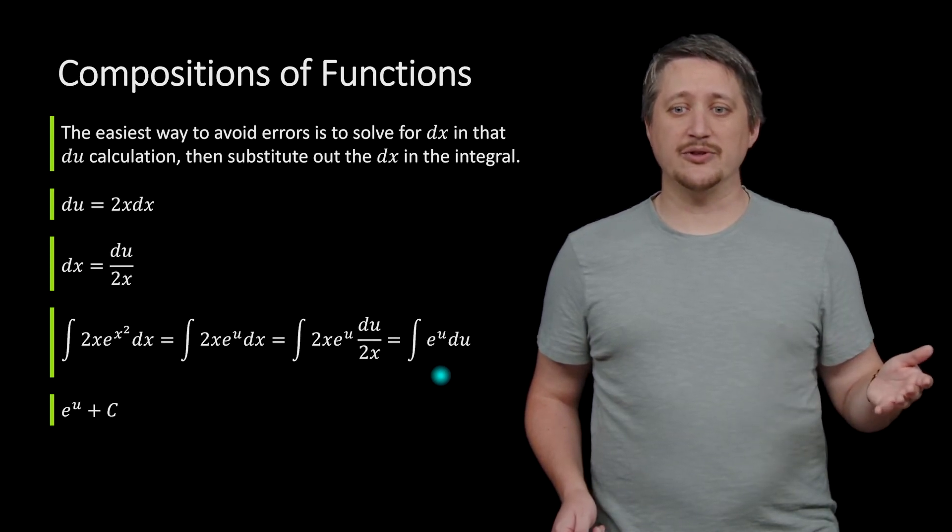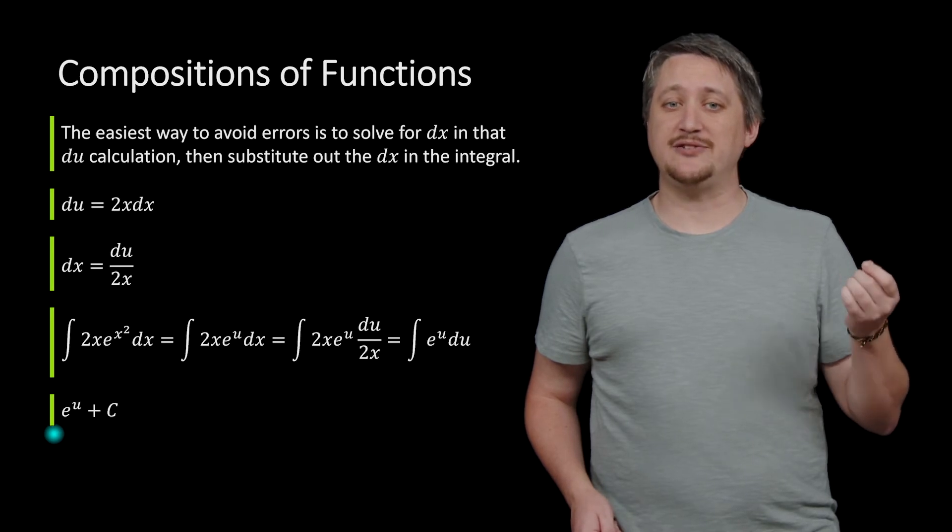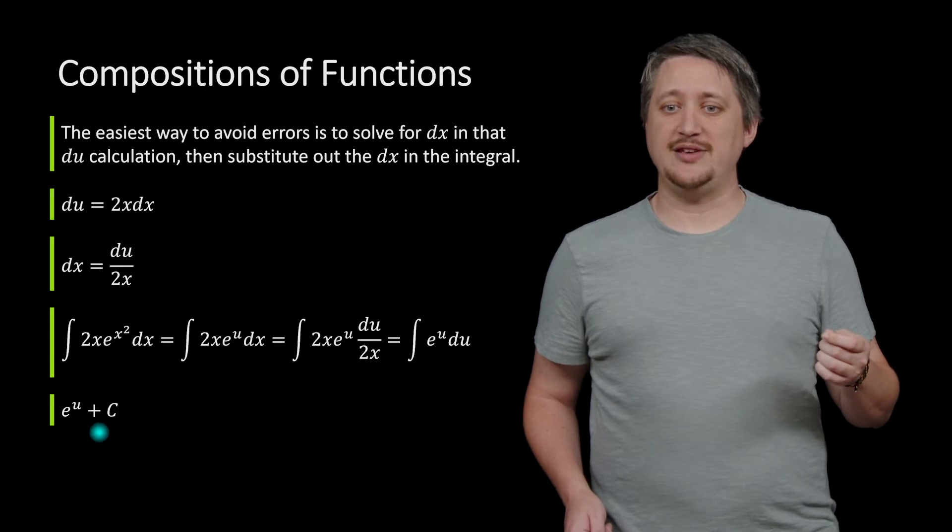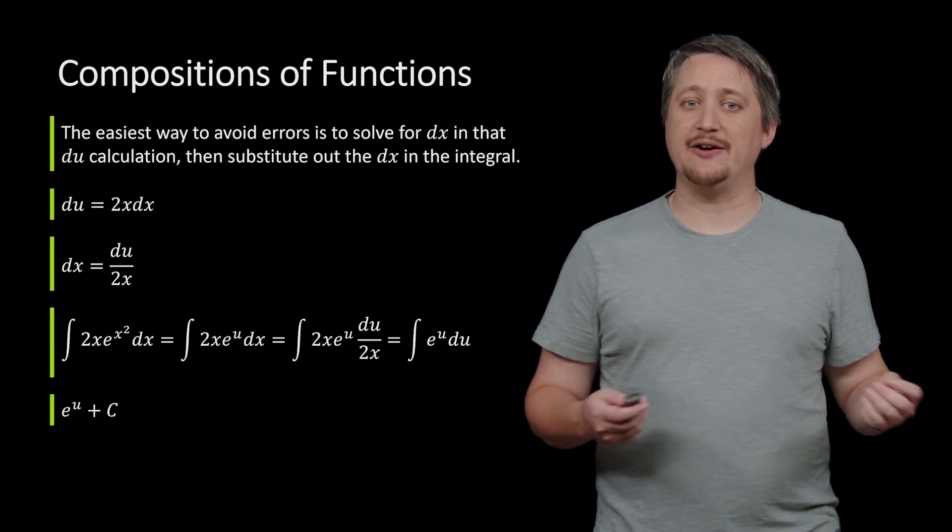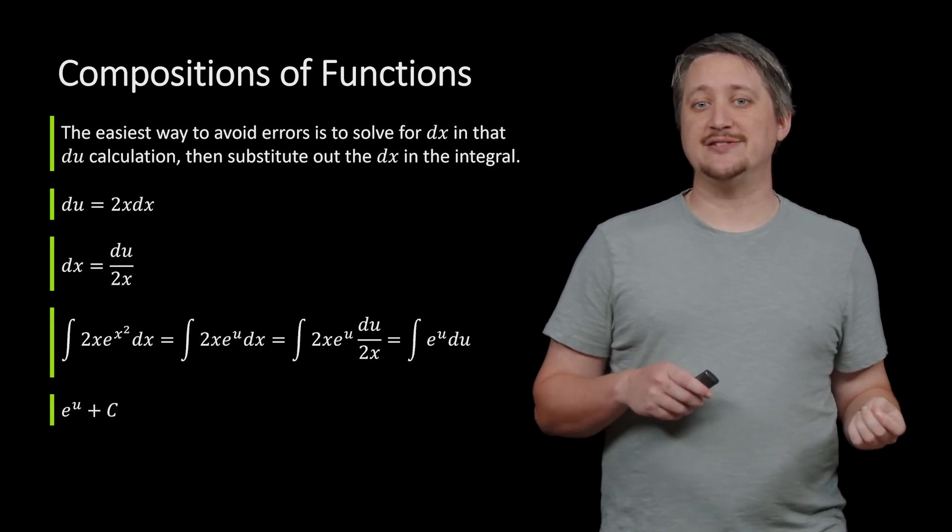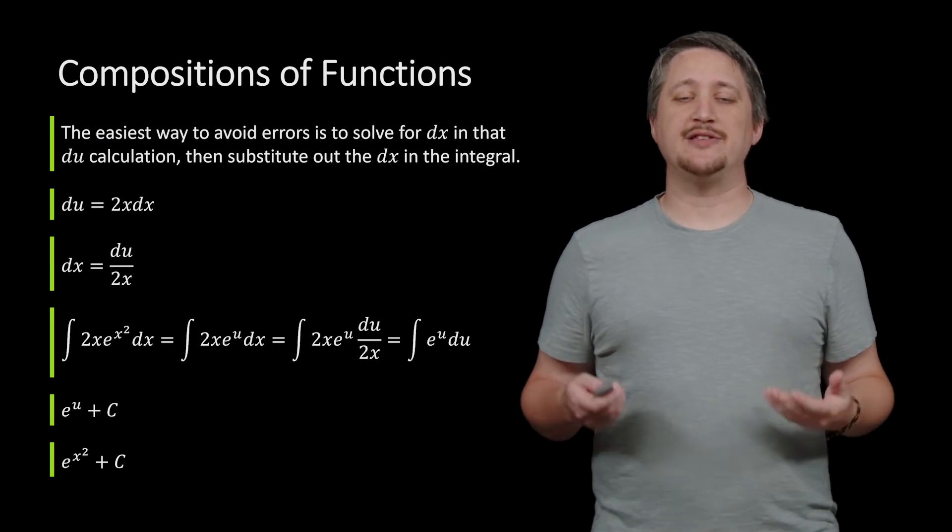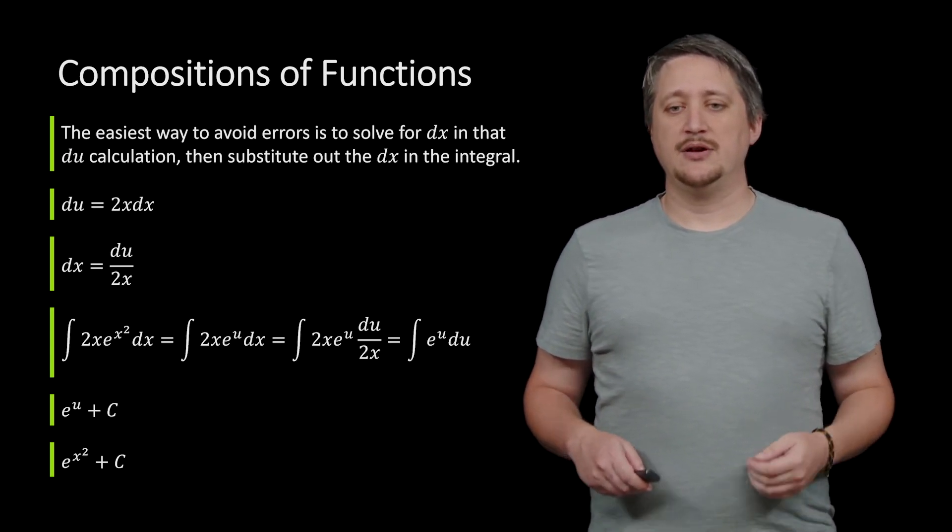And so the indefinite integral, the antiderivative of e to something, is itself. And so then I get the plus c. But now I can put it back what my u was. Now I can return to the x's that it was given initially as, which means that I end up with this e to the x squared plus c.